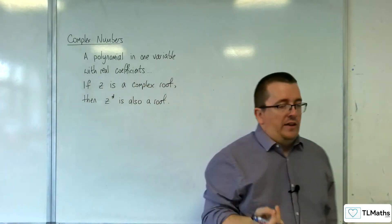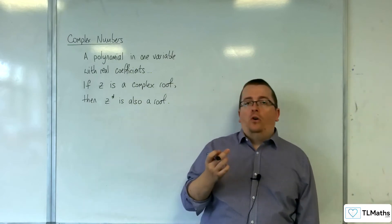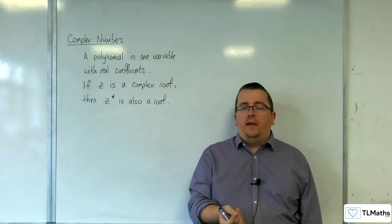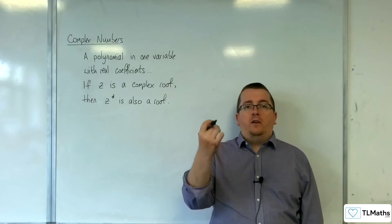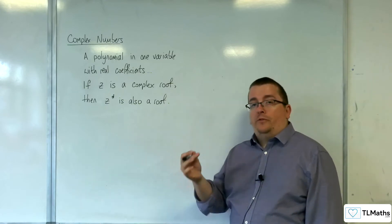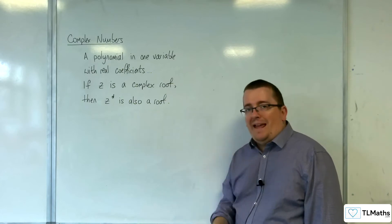Now, this is particularly useful. And this works for any ordered polynomial. So it could be a quadratic, cubic, quartic, whatever. That's very important. What that means is that the complex numbers appear in pairs.